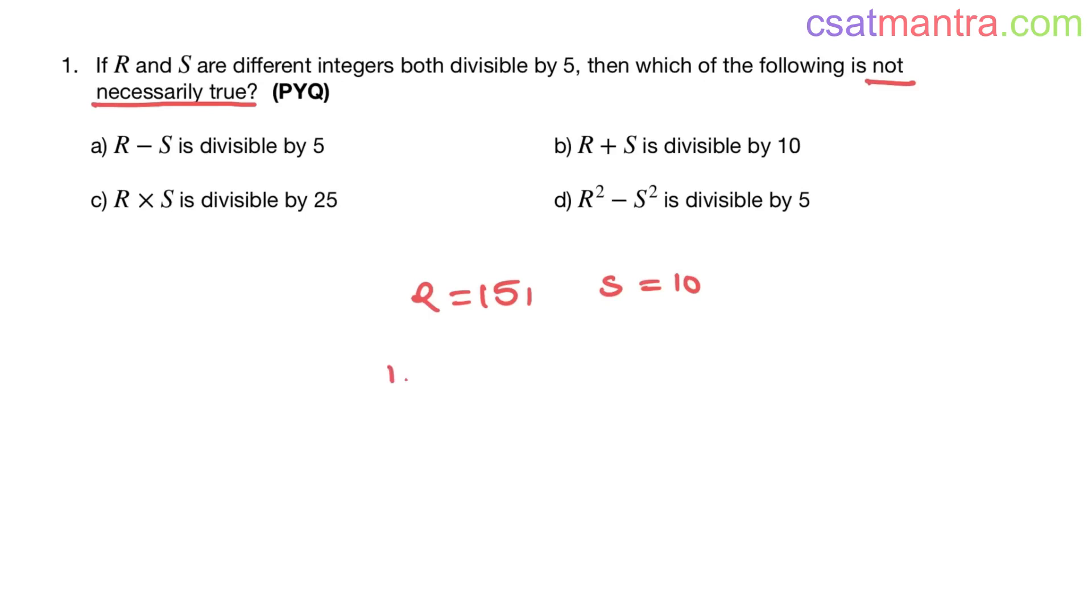R minus S, 15 minus 10, that is equal to 5. 5 is divisible by 5, so option A is true.